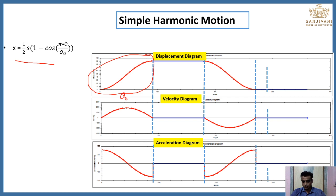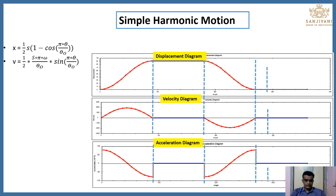This portion is where the follower moves in the downward direction, and this is again the dwell period. Now if we differentiate the term involving cosine of pi-theta over theta-o, we get the velocity: v equals one-half times s times pi times omega upon theta-o, into sine of pi-theta upon theta-o. This is the cosine curve for displacement and the sine curve for velocity. Differentiating, the derivative of theta with respect to time gives omega, which comes outside, resulting in the velocity equation: v equals one-half times s times pi times omega upon theta-o times sine of pi-theta upon theta-o.